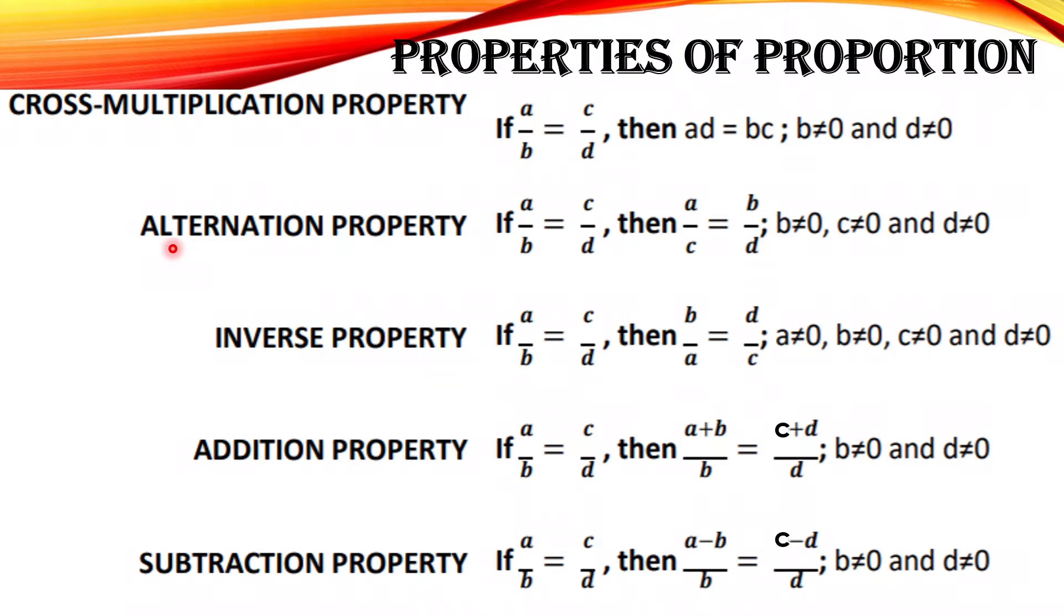Alternation property. The word alternation is alternate, so if a is to b is equal to c is to d, then a is to c is equal to b is to d. So the numerator here becomes the denominator here. The denominator here becomes the numerator here, where b, c, and d is not equal to zero.